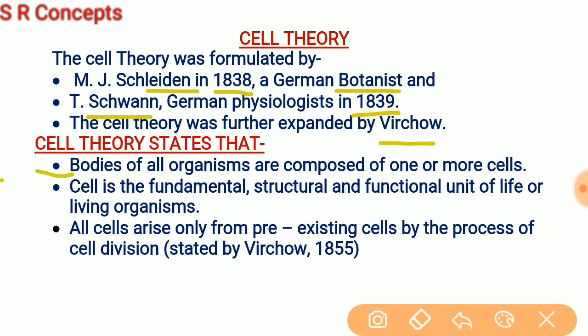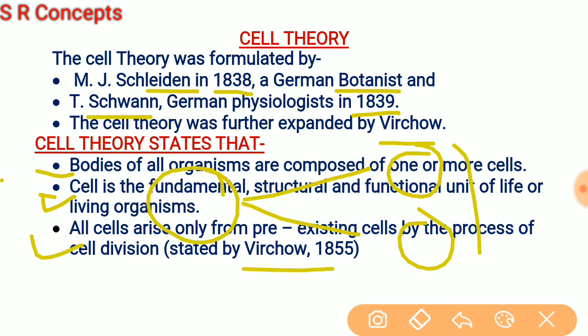Here are the postulates of cell theory. First, the bodies of all organisms are composed of one or more cells and their products. Second, the cell is the fundamental structural and functional unit of life. Third, all new cells arise from pre-existing cells by the process of cell division — when a cell divides, it produces new cells.